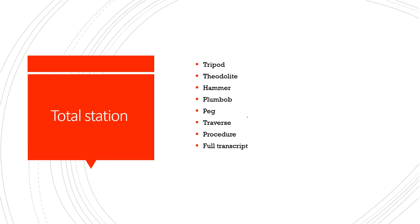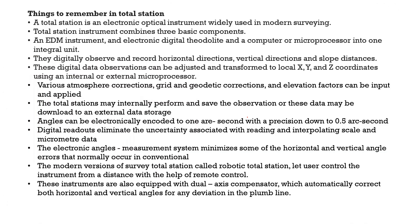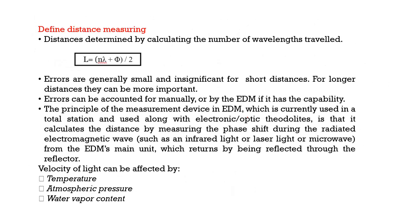When you use the total station you use a tripod, theodolite, hammer, plumb bob, peg, traverse, and procedure. The electronic optical instrument has three basic components: the EDM instrument, electronic digital theodolite, and computer or microprocessor. If you observe data, you can record it. Angles are measured electronically, and atmospheric conditions are also taken into account. Distance is determined by calculating the number of wavelengths.